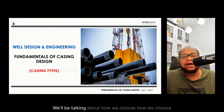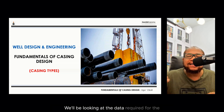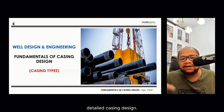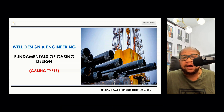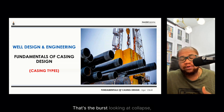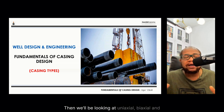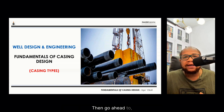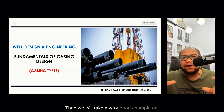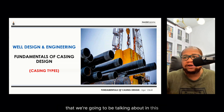We'll be defining types of casing, talking about how we choose casing setting depths, looking at the data required for detailed casing design, and discussing casing design concepts. We'll look at how to calculate internal yield pressure — that's the burst — as well as collapse calculations, yield calculations, and uniaxial and triaxial analysis calculations. We'll then take a comprehensive example and apply all the concepts covered in this module.